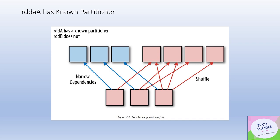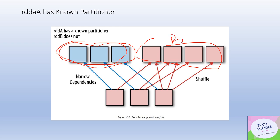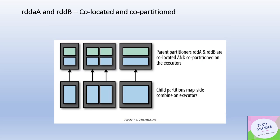When we have used a known partitioner and explicitly partitioned RDD A with the hash partitioning algorithm, the transformations on the RDD A side become narrow for that particular joining key. However, the shuffling still happens on the RDD B side because it doesn't have a known partitioner. This will reduce shuffling but not eliminate it entirely, so we need to partition both RDD A and RDD B.